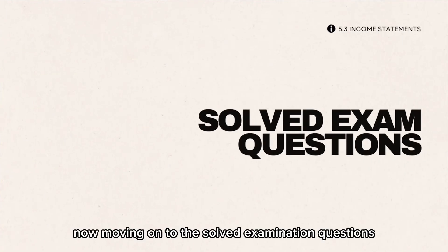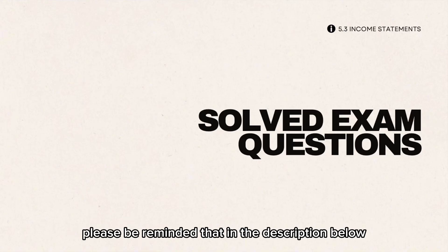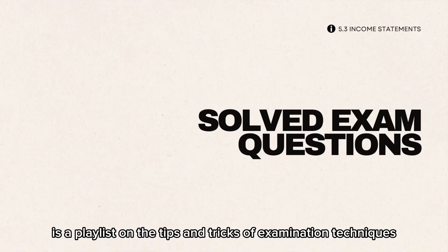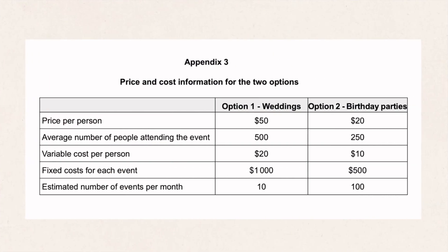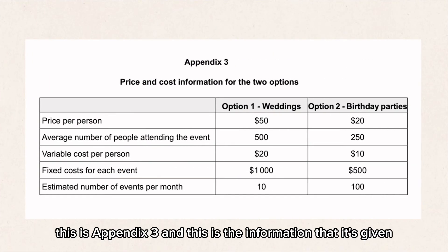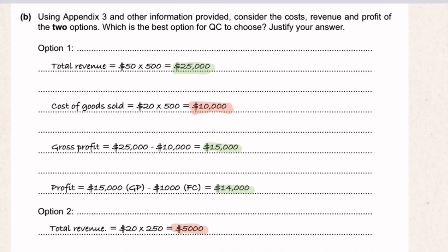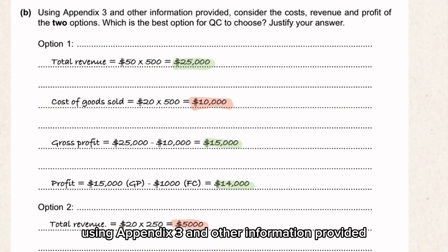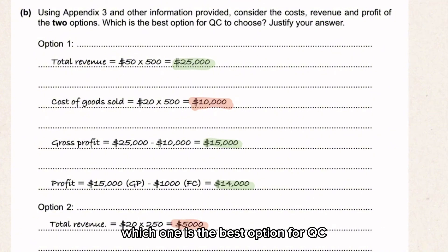Moving on to solved examination questions — in the description below is a playlist on tips and tricks for examination techniques for paper one and paper two. This is a paper two question using appendix three. The question asks: using appendix three and other information provided, consider the costs, revenue, and profit of the two options — which one is the best option for QC? Justify your answer.